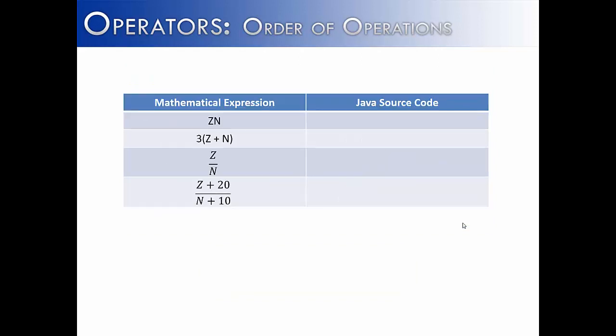On the left of this chart I have some mathematical expressions. And if you're in math class, you could probably quickly realize what the person was trying to do. As in the case of ZN, you would probably be saying Z times N. But Java is not that savvy and would not be able to compile code like this. You'd actually have to spell it out for it and say Z times N.